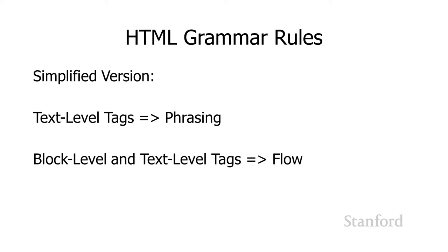Between text level and block level tags: if I've got a bunch of text with text level tags mixed in — like bold and italic tags — I refer to that as phrasing. If I've got text with both block level tags and inline tags, I refer to that as flow.